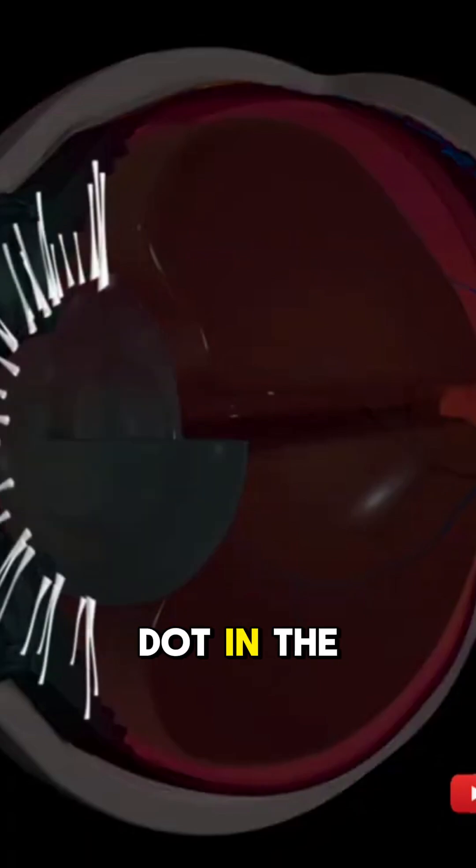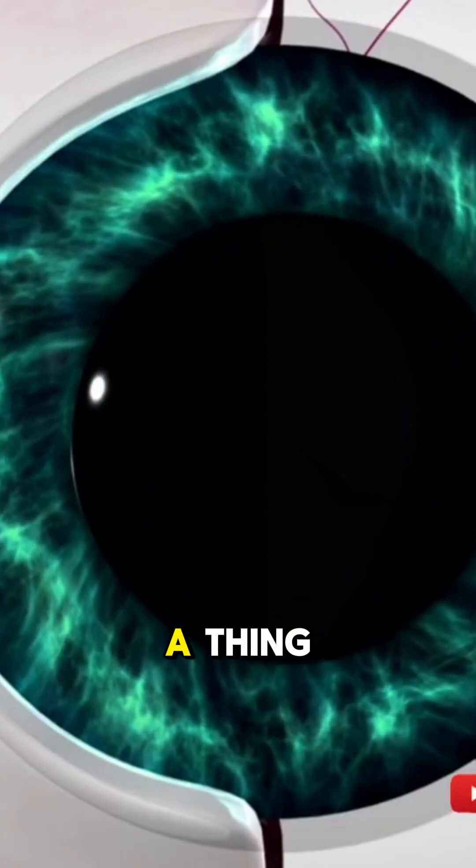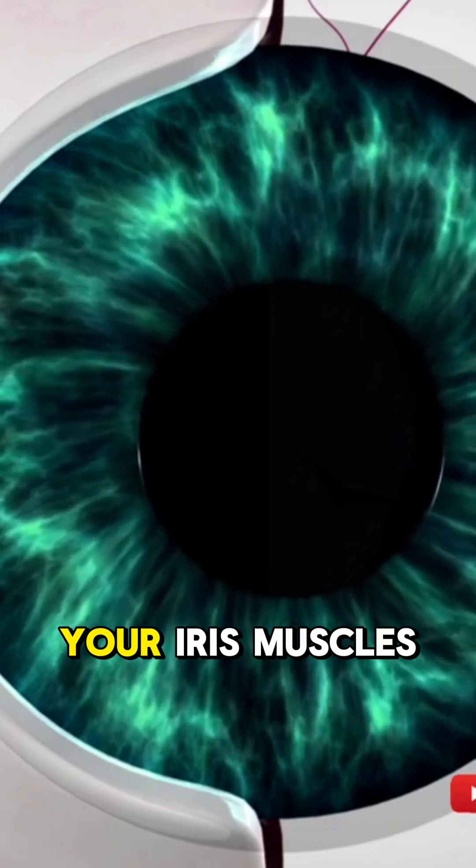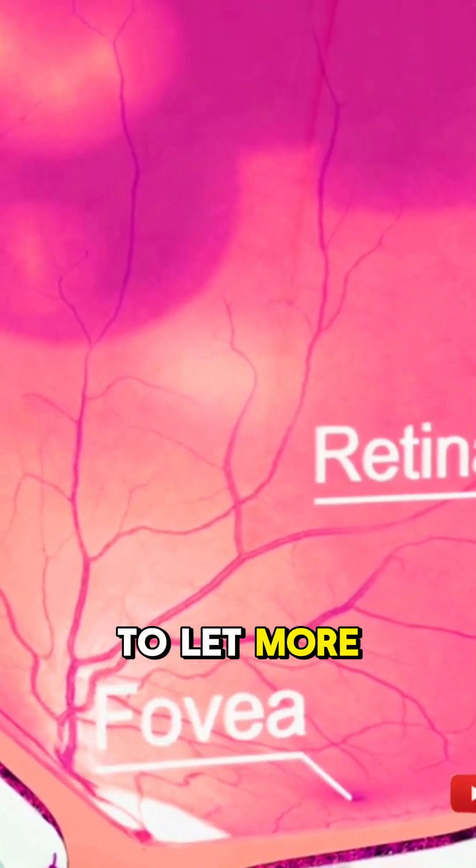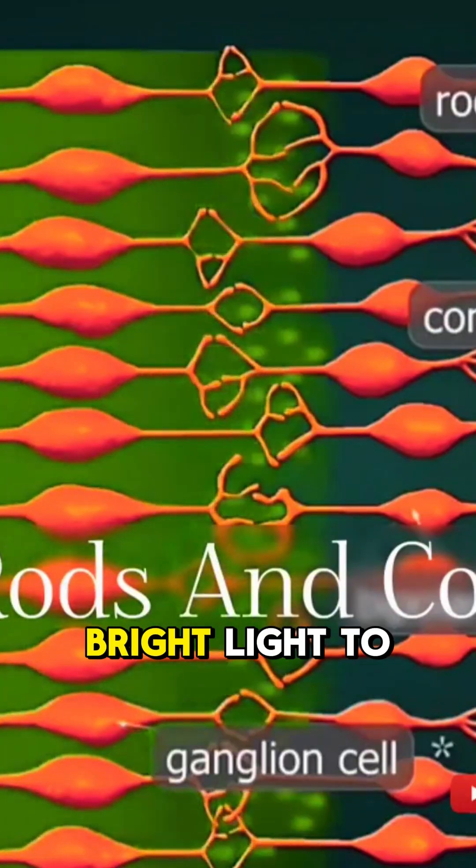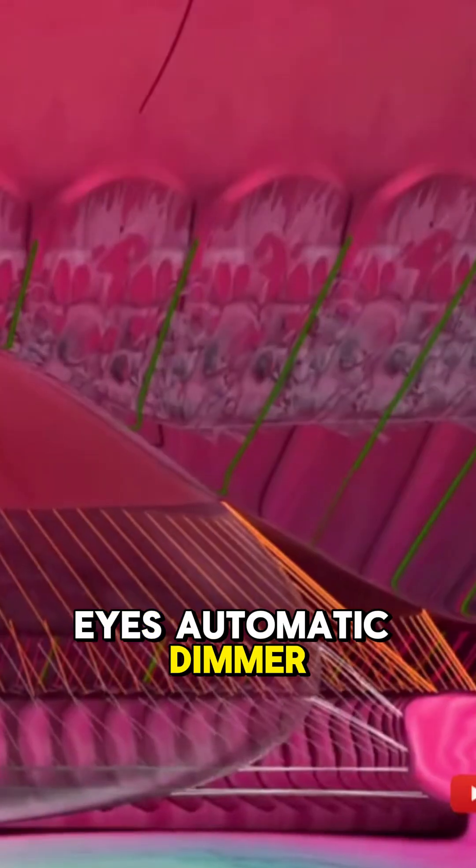That tiny black dot in the middle of your iris, that's your pupil. It's not actually a thing, just a hole. Your iris muscles control it, making it bigger in dim light to let more light in, and tiny in bright light to protect your eye. It's like your eye's automatic dimmer switch.